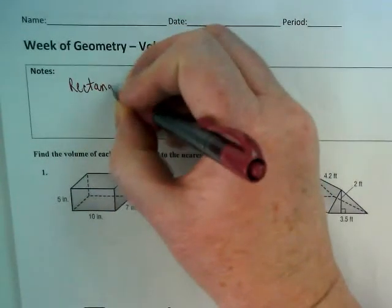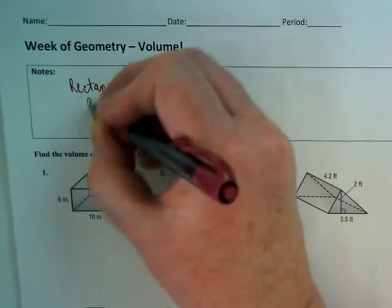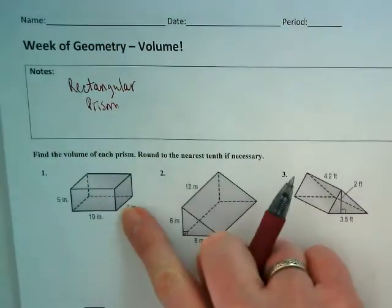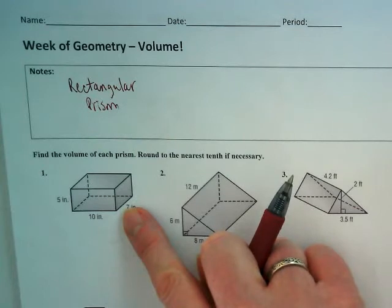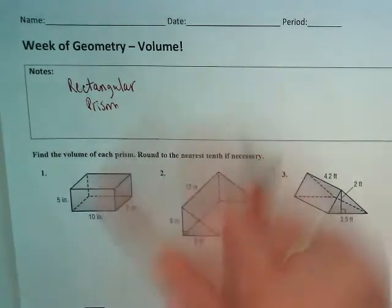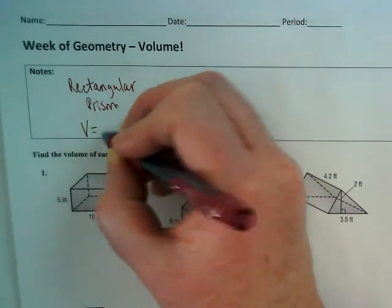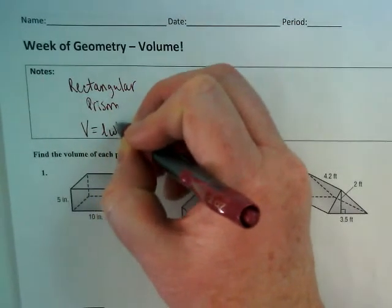A rectangular prism, and you can see a rectangular prism right here. It's what you would really consider normally like a box, the shape that a box would be for a gift or a package that's shipped. And that is volume equals length times width times height.